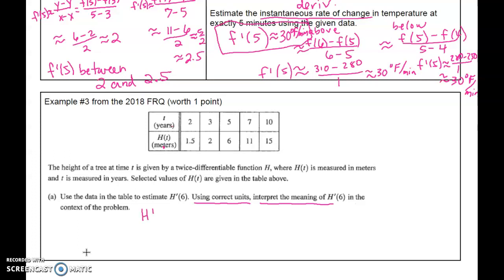So H'(6), and all of this would be one point. If you forget your units, you don't get the point. Now this time 6 is not on my table, so this actually makes it even easier. All you have to do is find the interval that contains 6. Technically I could go from 5 to 10, or 3 to 10, or 2 to 10, but the best estimate will be the smallest interval.